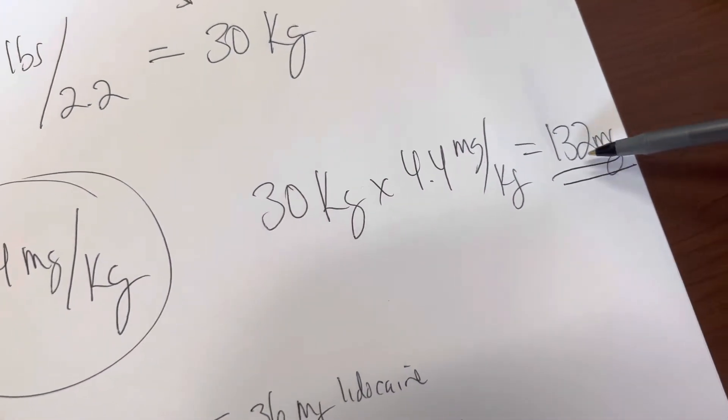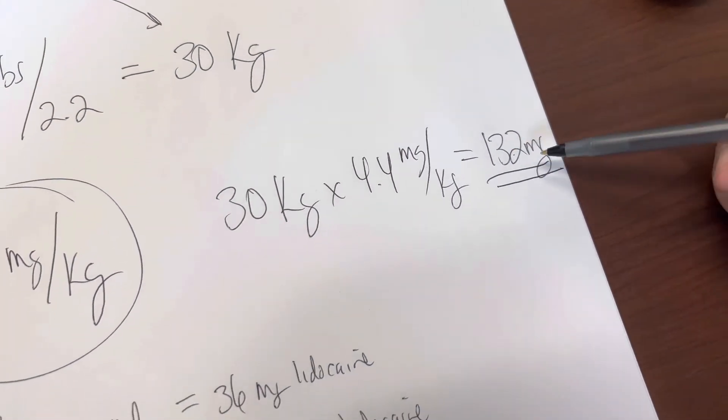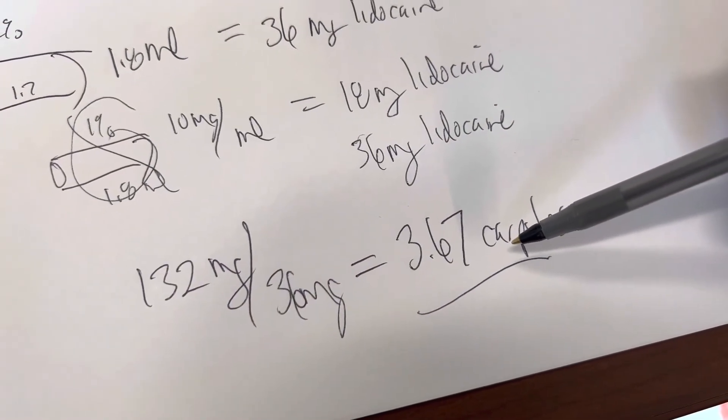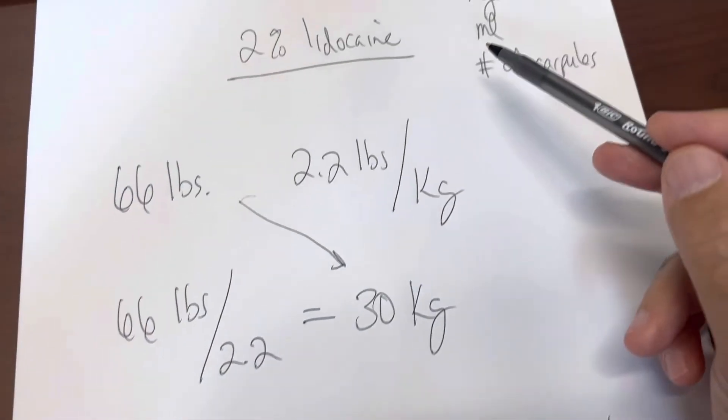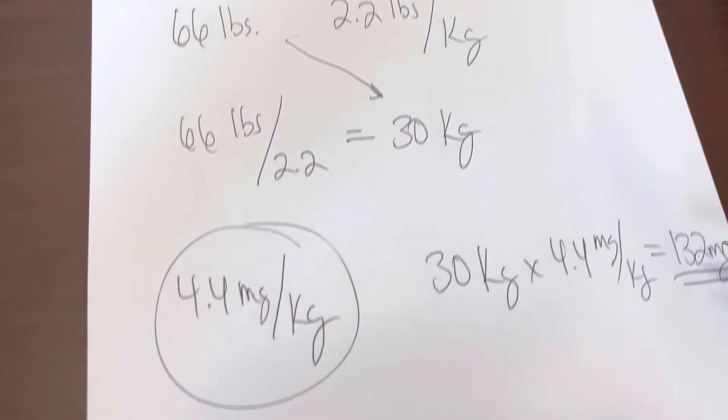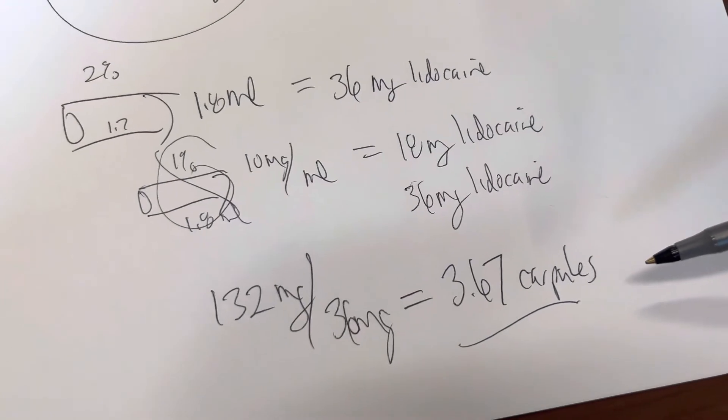So we knew the maximum dose in milligrams is 132. We know the maximum number of carpules is 3.67. But what happens if they ask us the question in milliliters? How do we convert this information to milliliters?